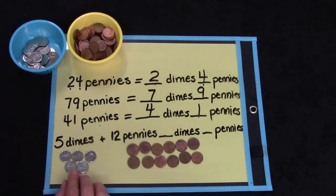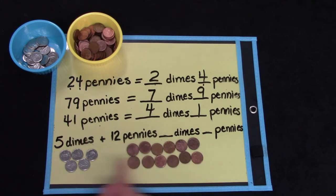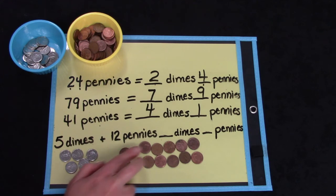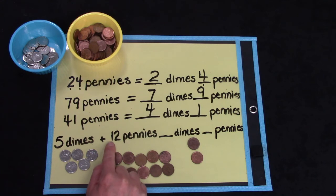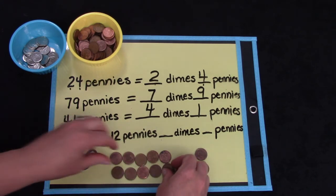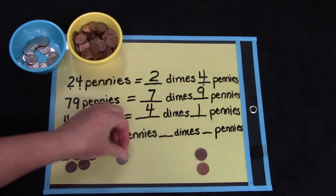How about this hard question? What if we have 5 dimes and 12 pennies? Well, we've got 5 dimes, but could we trade some of these pennies for a dime? We can. Look right here. In our tens place, we have another group of 10. 2, 4, 6, 8, 10. This is showing our group of 10 and this is showing our 2 left over. So we can trade this group of 10 for a dime.